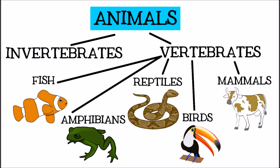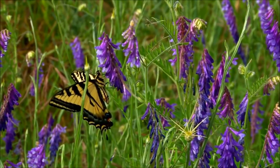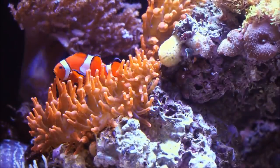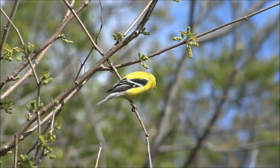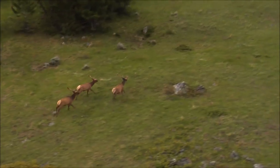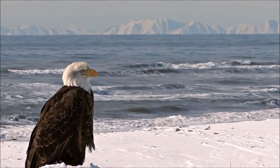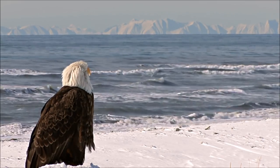The animal kingdom is classified into many different groups based on animal characteristics to help us understand the world around us. Saying an animal is an invertebrate, a vertebrate, a fish, amphibian, reptile, bird, or mammal tells us many things about it that can help us understand its needs and behavior. I hope you enjoyed learning about animal classification today. Goodbye till next time!